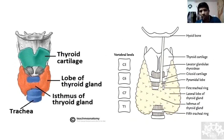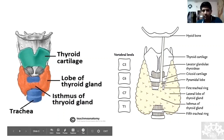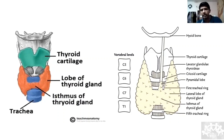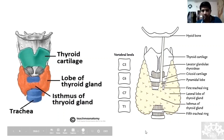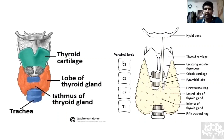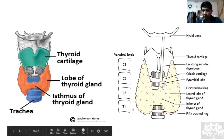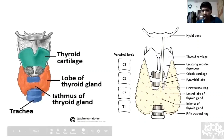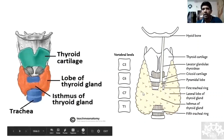Coming to the anatomy: the thyroid is a butterfly-shaped gland located in the anterior triangle of the neck, between the two carotid arteries. It extends from C5 to T1. You have a right lobe, a left lobe, and they are connected in the middle via the isthmus.